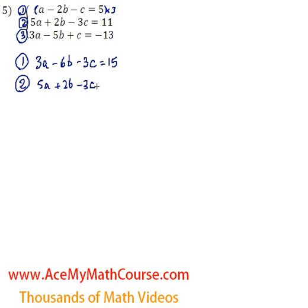Why did I multiply the top equation by 3? Because now I have minus 3c and minus 3c. So all I need to do is subtract the equations and the 3c's are going to disappear. Because minus 3c minus negative 3c, minus negative makes a plus, and minus 3c plus 3c will be 0. So 3a minus 5a, negative 2a. Minus 6b minus 2b will be negative 8b. And over here we have 15 minus 11, so just 4.